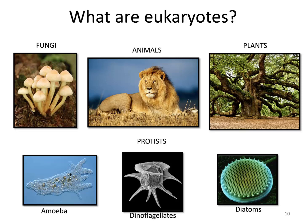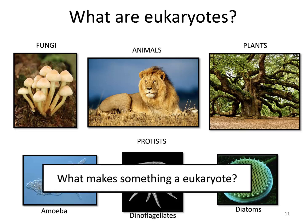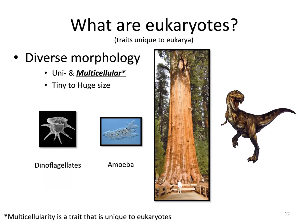Typically, when we think of tiny microscopic unicellular organisms, we think of prokaryotes — bacteria and archaea. But there are eukaryotic organisms that are small too, which raises the question: what makes something a eukaryote? What are the unique traits that make something eukaryotic, if it's not just multicellularity?